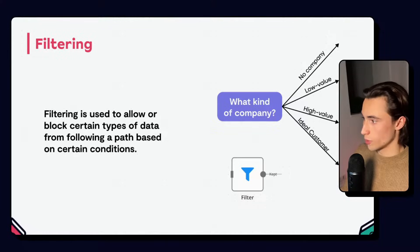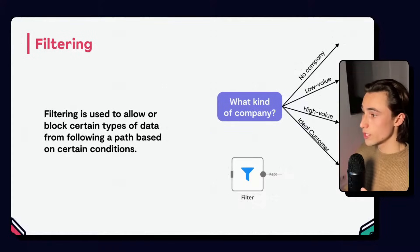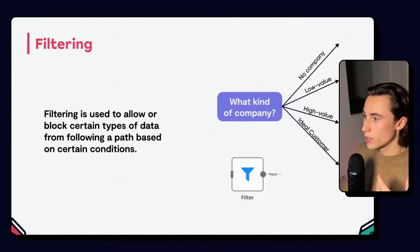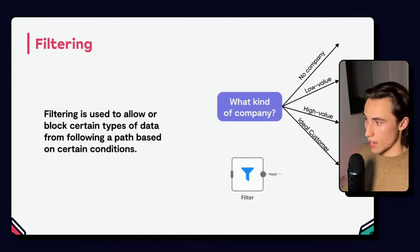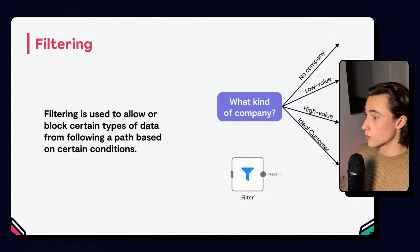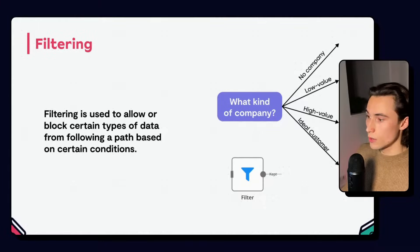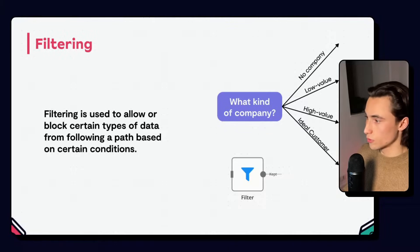Then we have filtering. Filtering is what allows us to allow or block certain types of data from following specific paths based on certain conditions. Using the example from earlier, depending on the kind of company — whether there is no company, a low value company, a high value company, or if the company is an ideal customer — we're going to be sending that company down different paths. Underneath, you can see the filter node in N8N, which allows you to filter data based on predetermined conditions. For example, if we had no company, we wouldn't continue the workflow because there is nothing to do.